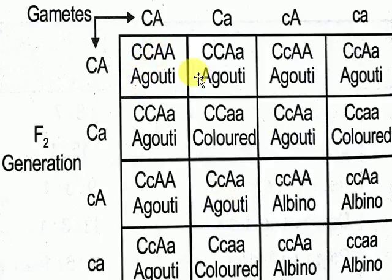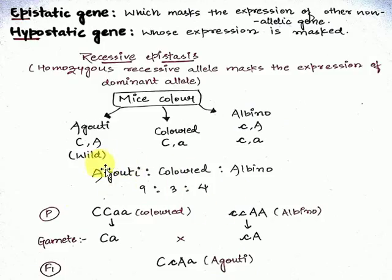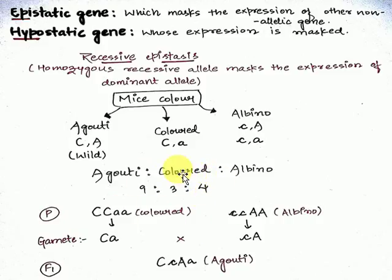Counting the outcomes: agouti appears 9 times (both C and A dominant), colored appears 3 times (only C dominant), and albino appears 4 times — 3 where only A is dominant plus 1 where both are recessive. So the ratio is 9 agouti : 3 colored : 4 albino. Albino gets 3+1=4 because that additional double-recessive case is included in albino.